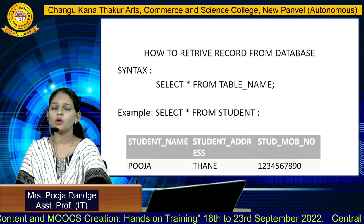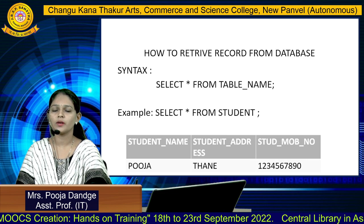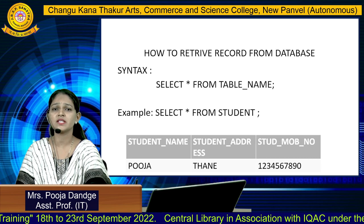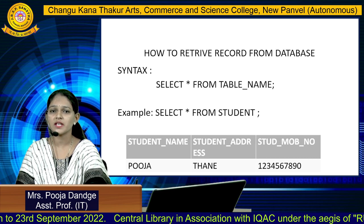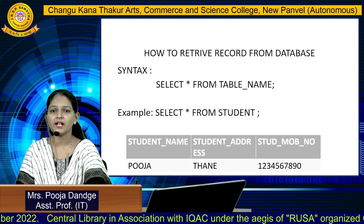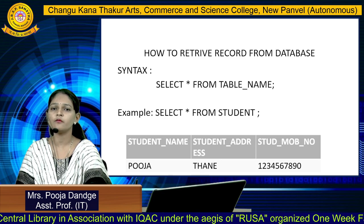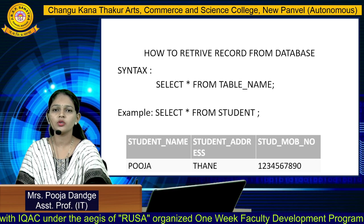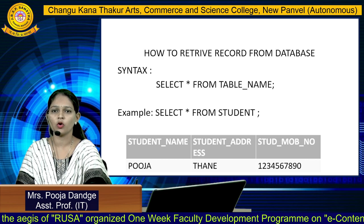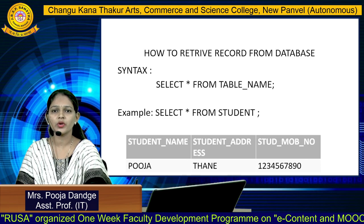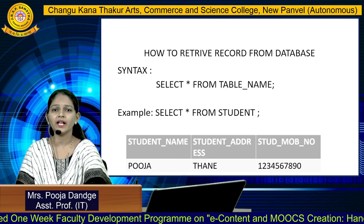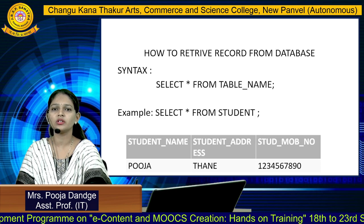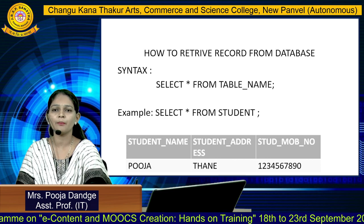Now, how to retrieve records from the database? We have seen how to insert, update, and delete. Suppose I need to see all records — how many records I inserted, updated, or deleted. The database provides the SELECT command for this. The syntax is: SELECT * FROM table_name semicolon. For our student table: SELECT * FROM student.